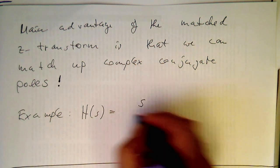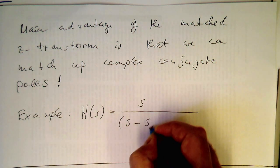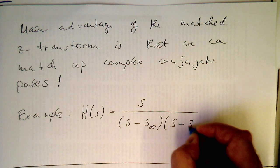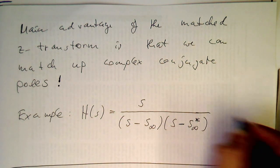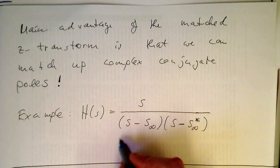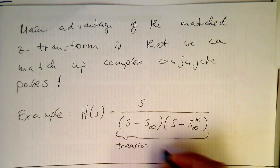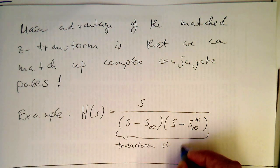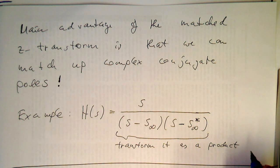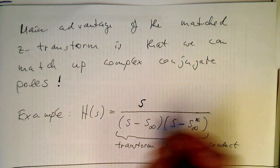If we have our analog transfer function, which looks like this — S minus S_∞, and then S minus S_∞ star — we just leave them together here. The idea is to transform it as a product. The same applies up here, but in this case we have only S here, and this gives us a real zero anyway.